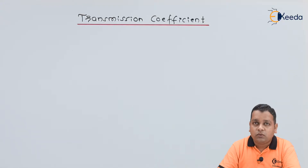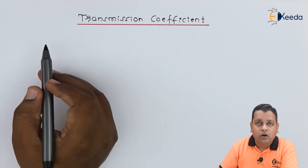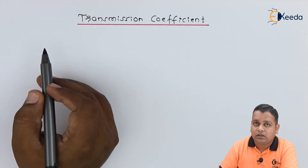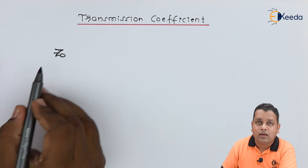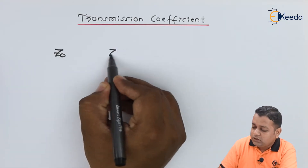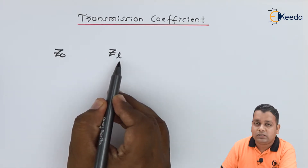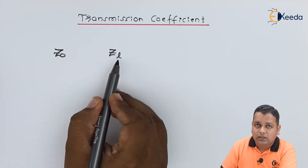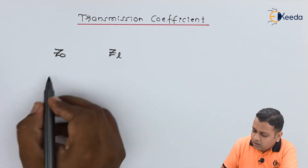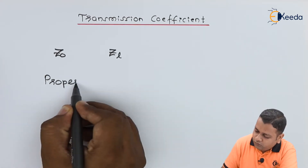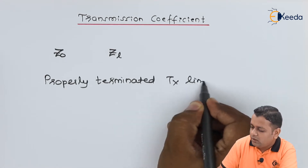We start with our topic: the transmission coefficient. Up till now it should be very clear that when we have the characteristic impedance, denoted by Z₀, matched to that of the load impedance Z_L, we call the transmission line under consideration to be a properly terminated transmission line.